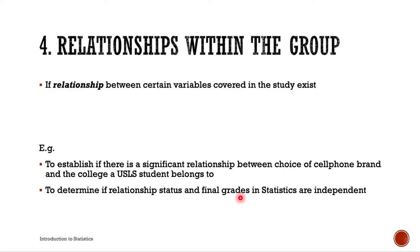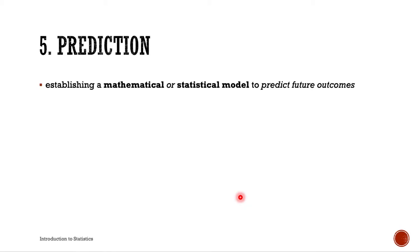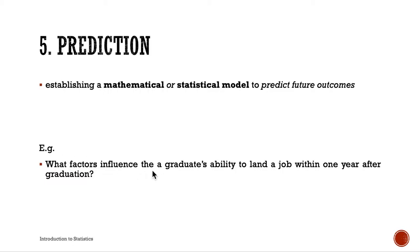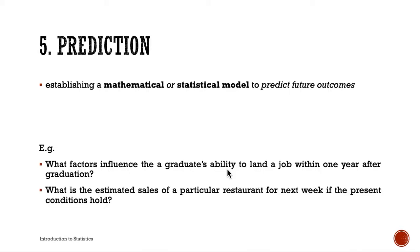Fifth is prediction, which involves establishing a mathematical or statistical model to predict future outcomes. Examples include: what factors influence a graduate's ability to land a job within one year after graduation, and what is the estimated sales of a particular restaurant for next week if the present conditions hold. These are situations where the prediction classification is used.